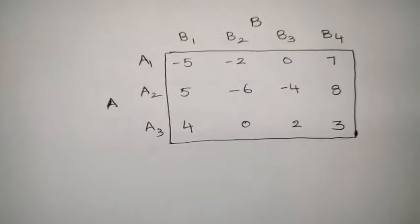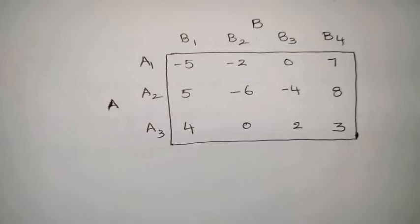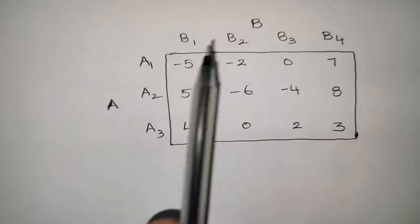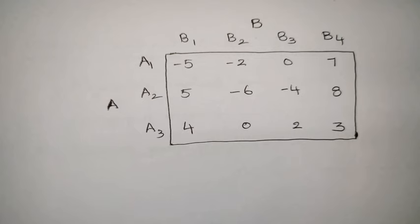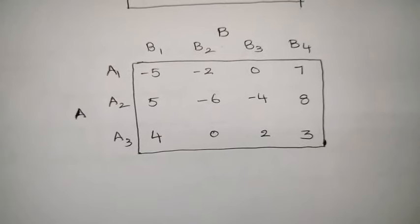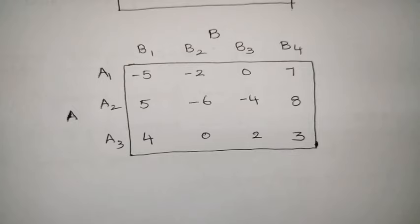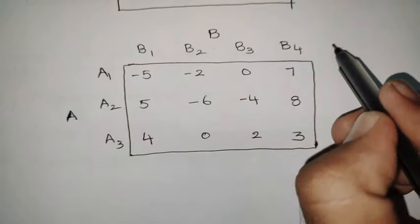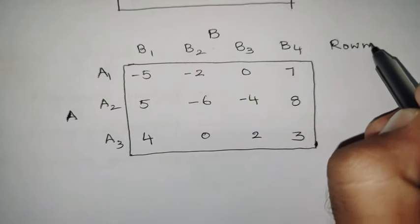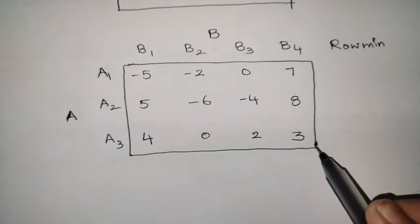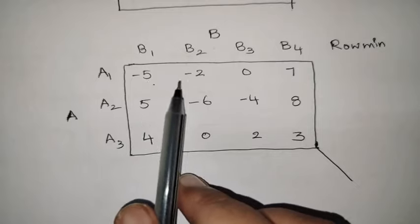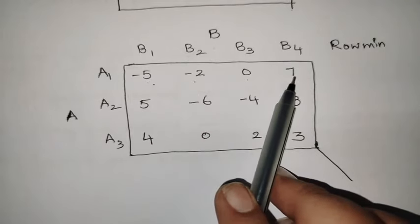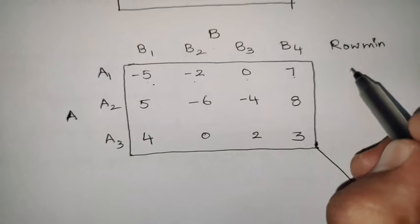Here is the same payoff matrix taken separately — player A with 3 strategies, player B with 4 strategies, and those payoff values. Now let us find the maximin value. Take the first row. The values are minus 5, minus 2, 0, 7. The minimum value is minus 5.